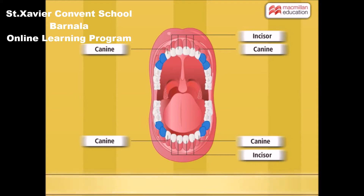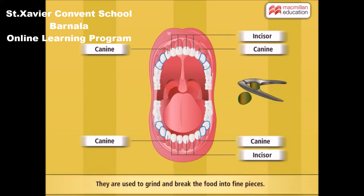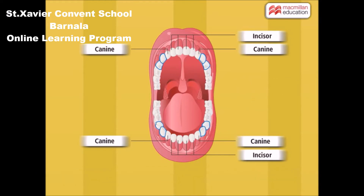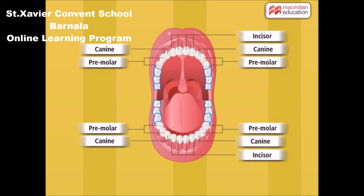Next to each canine, there are two broad and flat teeth. They act as a nutcracker and are used to grind and break the food into fine pieces. They are called premolars. There are four premolars in each jaw.